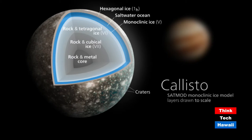This is another moon of Jupiter — Callisto. It also has hexagonal ice on the surface, and people believe there's a subsurface ocean. Deeper, because pressure and temperature conditions are different, they have monoclinic ice, ice V, and a mix of rock and tetragonal ice in the center. Callisto is only partly differentiated, unlike Ganymede which is fully differentiated — partly because Callisto is farther from Jupiter and experiences much less gravitational impact.